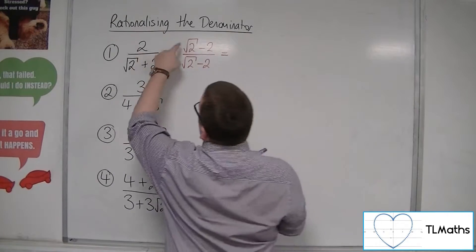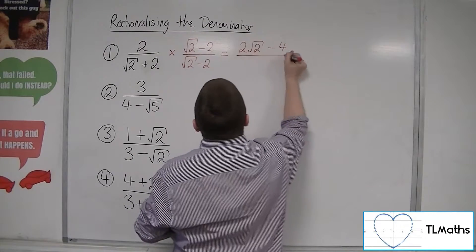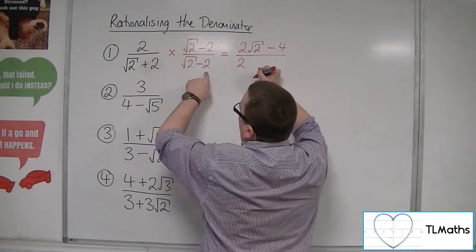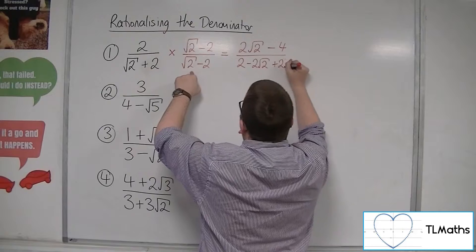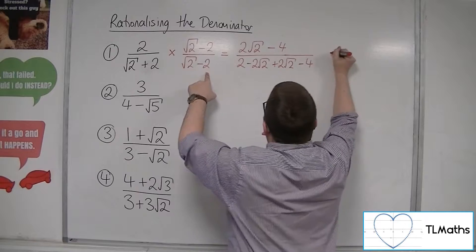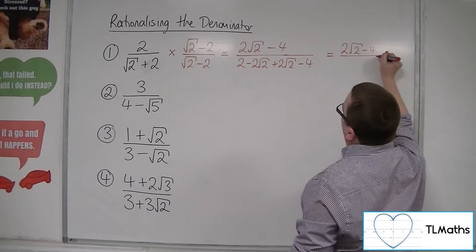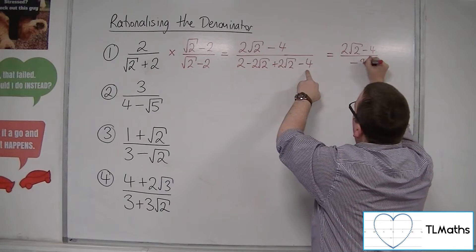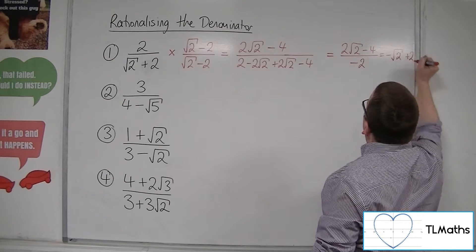So we've got 2 times root 2, and 2 times minus 2, over root 2 times root 2, and root 2 times minus 2, so minus 2 root 2. That gives us 2 root 2 minus 4 in the numerator. The roots will cancel, leaving 2 take away 4, so minus 2 in the denominator. So we'd have minus root 2 plus 2 as the answer.